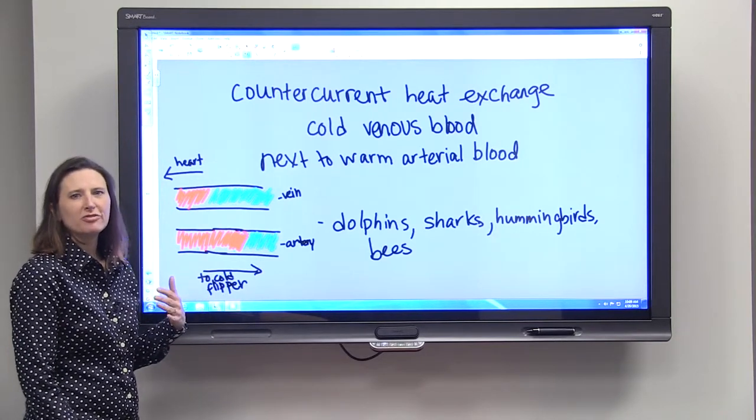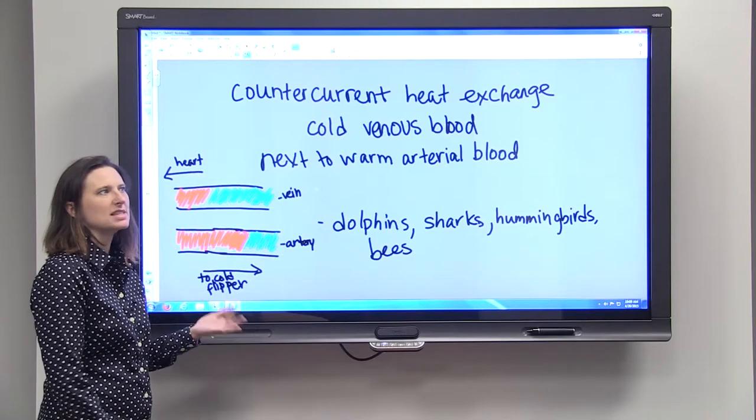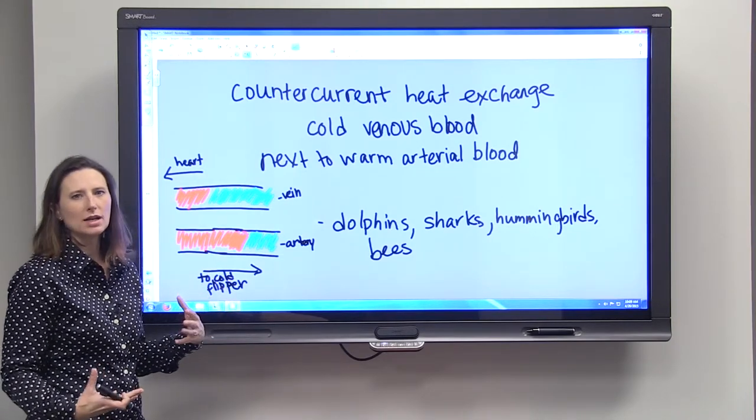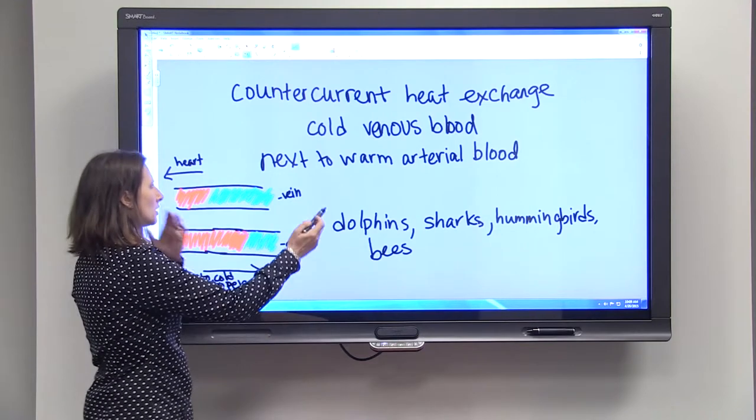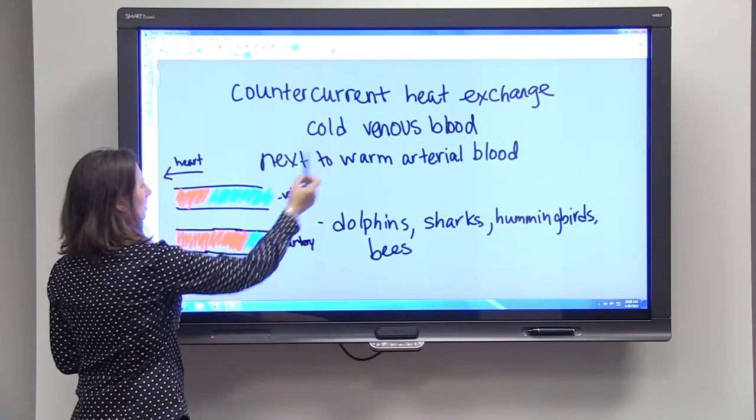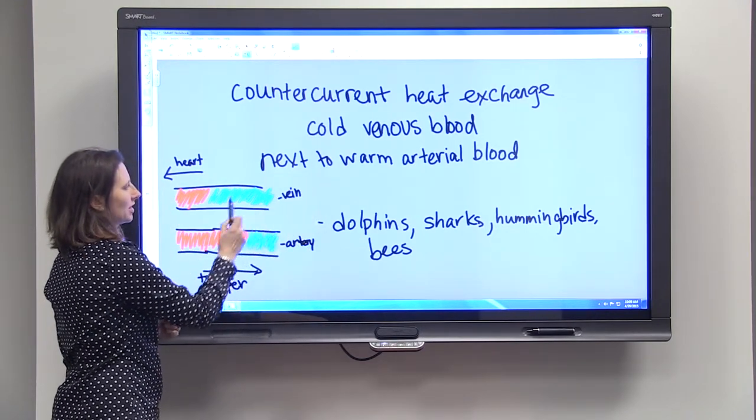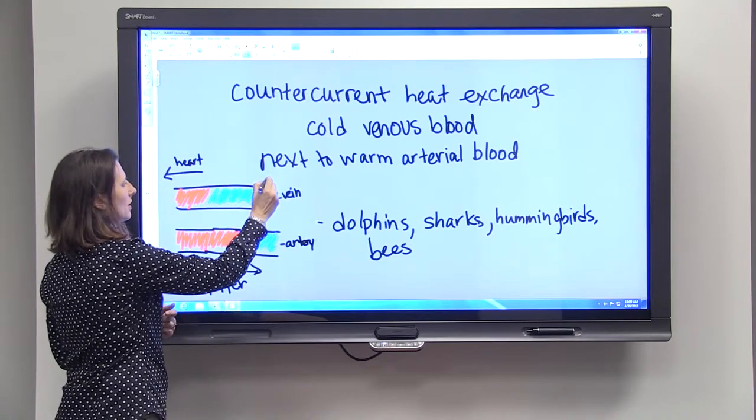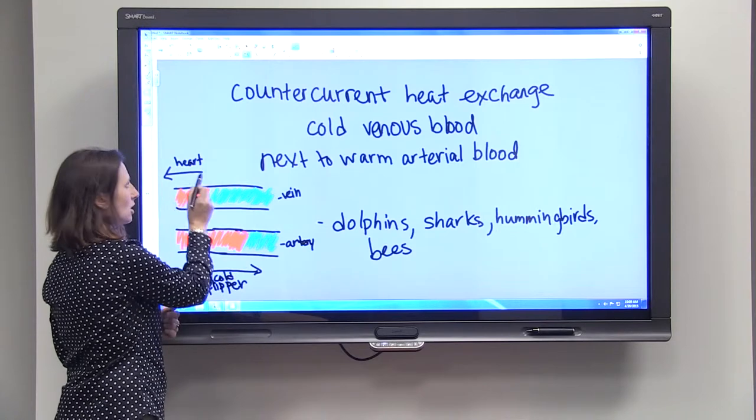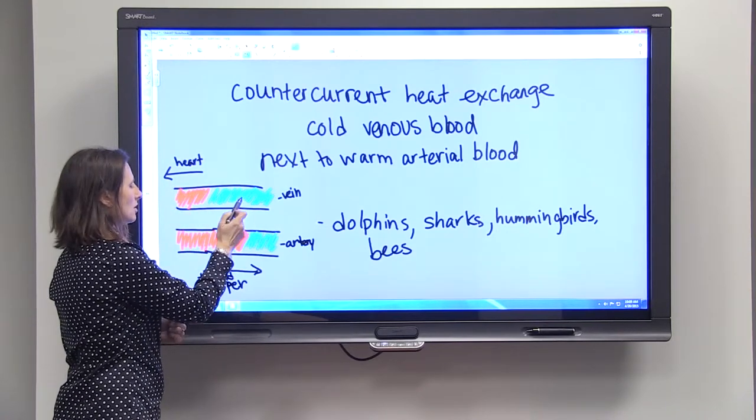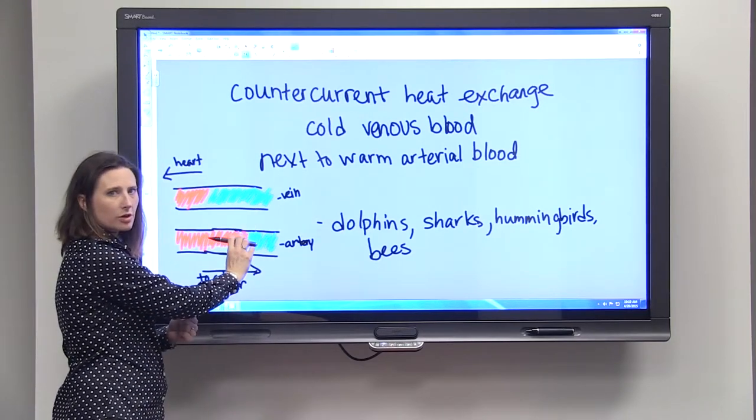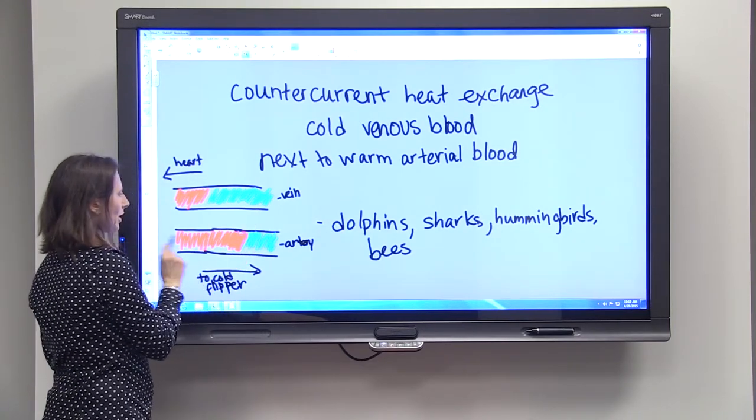Even if an animal is standing on a cold rock or swimming in cold water. And so what happens is the cold venous blood, the blood that's coming from the cold part of the body in the vein and going toward the heart.